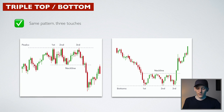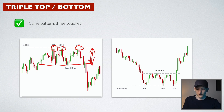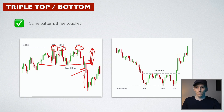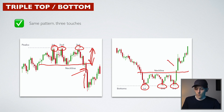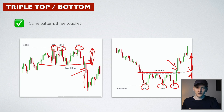Here are the textbook examples of a triple top and triple bottom. With a triple top you have first, second, and third touches, a neckline in between, and you take a short position at the break with the take profit being the height of the pattern from neckline to top. For the triple bottom, you have three touches with the neckline where price bounces in between. You take a long position at the break and the height of the pattern is your take profit.